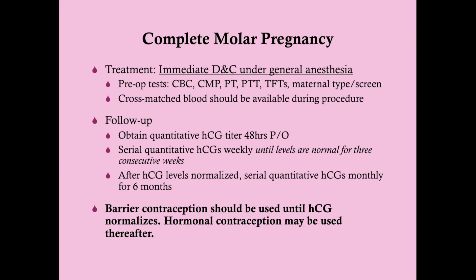We do not want her to conceive during this follow-up period, because a new pregnancy would cause HCG levels to rise appropriately, making it impossible to tell whether there is invasive disease. So we want her on contraception. She cannot use hormonal contraception while HCG is elevated; she should use barrier contraception during the weekly follow-up until HCG has normalized for three weeks. After that, she can use hormonal contraception for the remaining six months of follow-up.